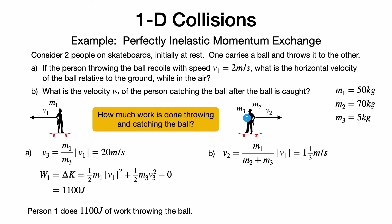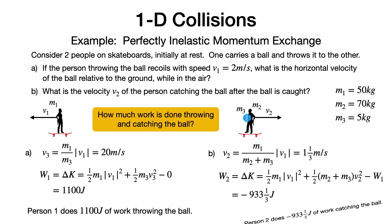When the person catches the ball, the speeds change again and energy changes in the system. The change in kinetic energy equals the work done by non-conservative forces. The final kinetic energy includes one-half M1 V1 squared for the thrower, plus one-half (M2 plus M3) V2 squared for the catcher and ball. Subtracting the work done by the person throwing gives the work done catching the ball, which turns out to be minus 933 and one-third joules. The person catching the ball actually absorbs energy into their system in the process of catching.